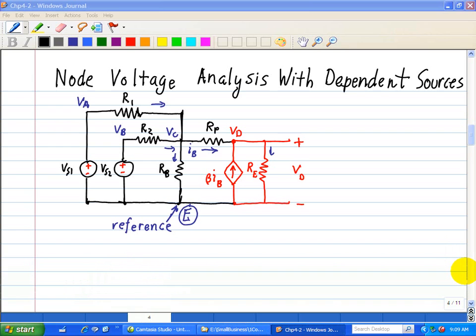Here we're going to do a node voltage analysis with dependent sources. We're given this circuit shown.